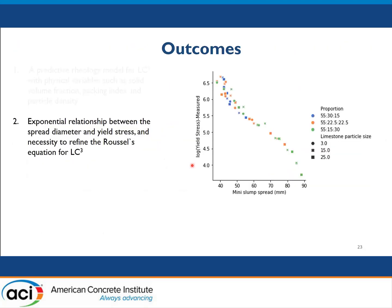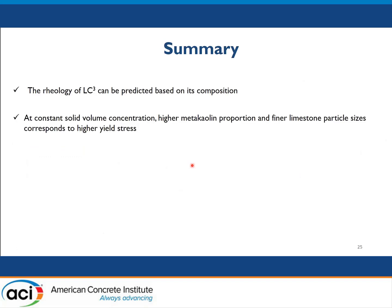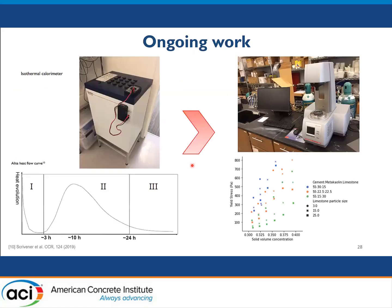In summary, we can predict LC3 rheology based on its composition. Metakaolin proportion and finer limestone particle sizes impact rheology significantly. Adding extra gypsum reduces the yield stress. An exponential relationship exists between mini-slump spread diameter and yield stress, and the Roussel equation needs to be refined. Our ongoing work is about correlating dehydration kinetics and heat evolution of LC3 to its rheology, and we hope to share those results in the future.